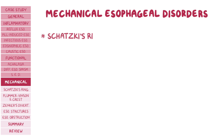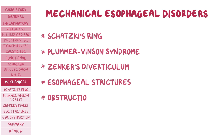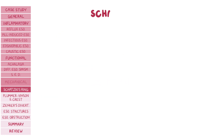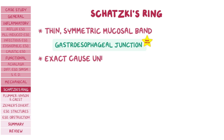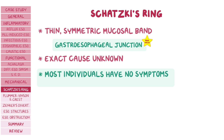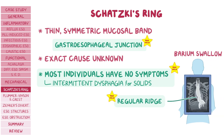Finally, we have mechanical esophageal conditions, which include Schatzky's ring, Plummer-Vinson syndrome, Zenker's diverticulum, esophageal strictures, and obstruction. Schatzky's ring is a thin, symmetrical mucosal band most commonly located at the gastroesophageal junction. The exact cause is unknown, but it can be associated with chronic acid reflux. In most cases individuals have no symptoms, but if the lumen gets too narrowed, they can present with intermittent dysphagia for solids. On a barium swallow, Schatzky's ring is seen as a small, regular ridge above the diaphragm that narrows the lumen.